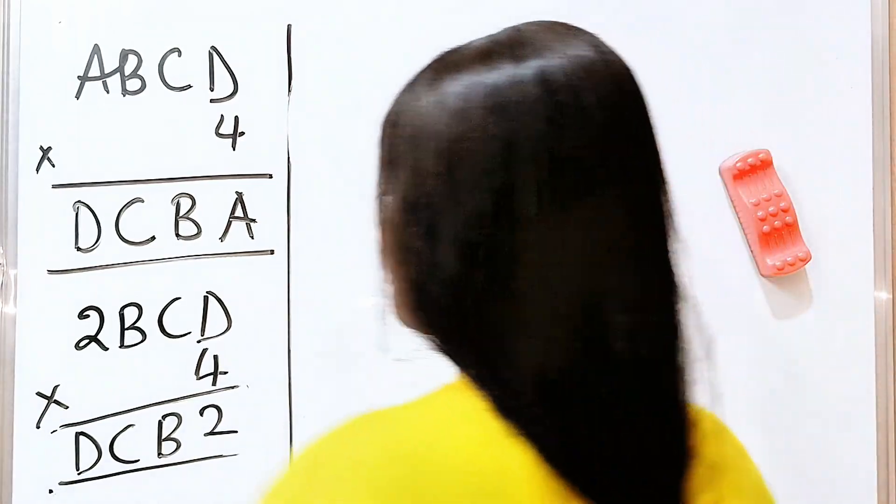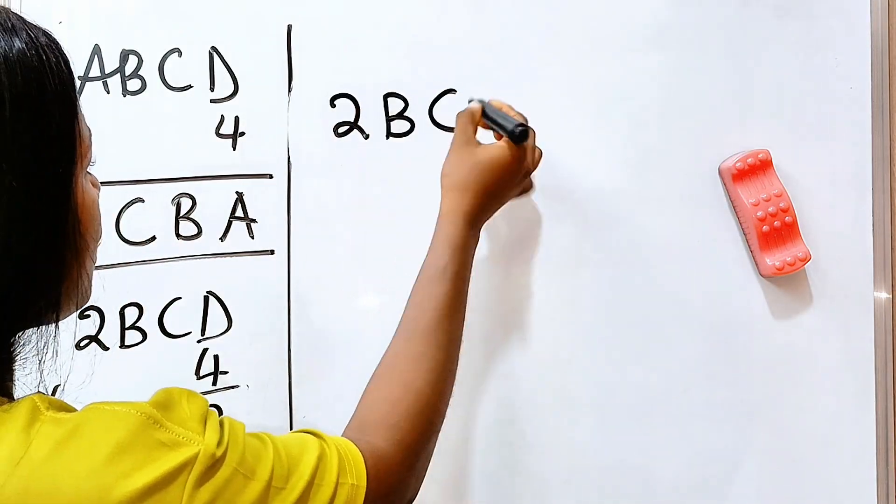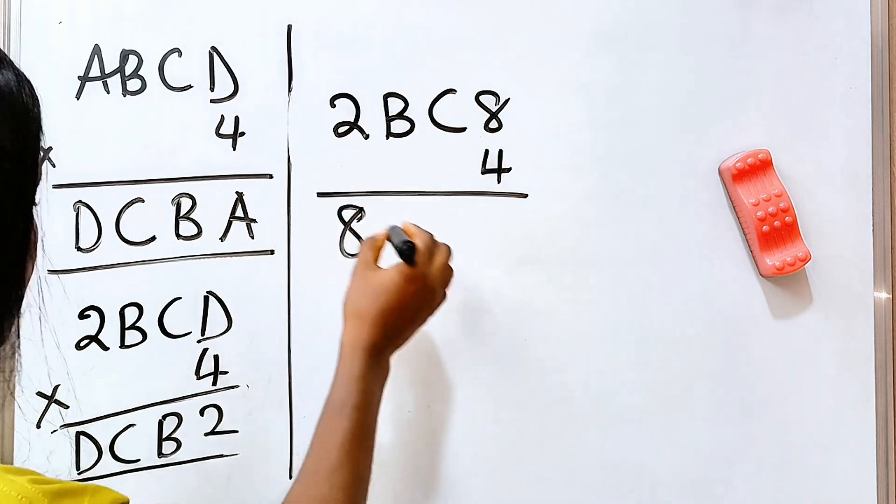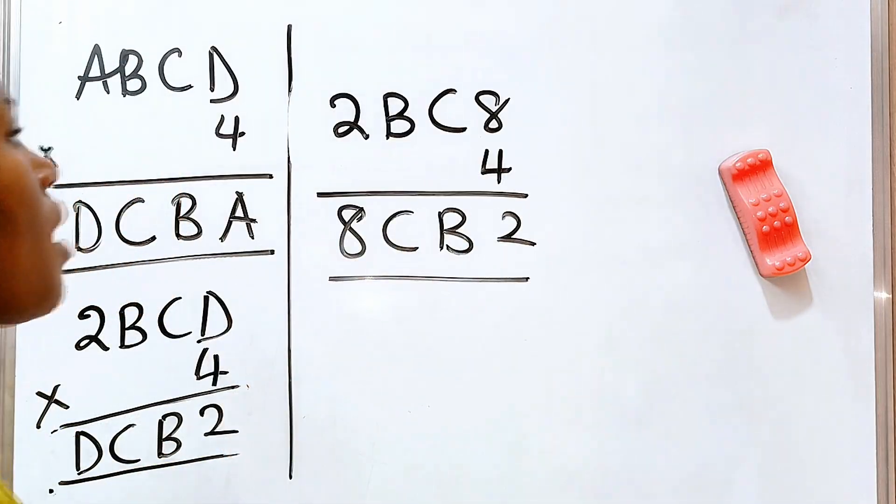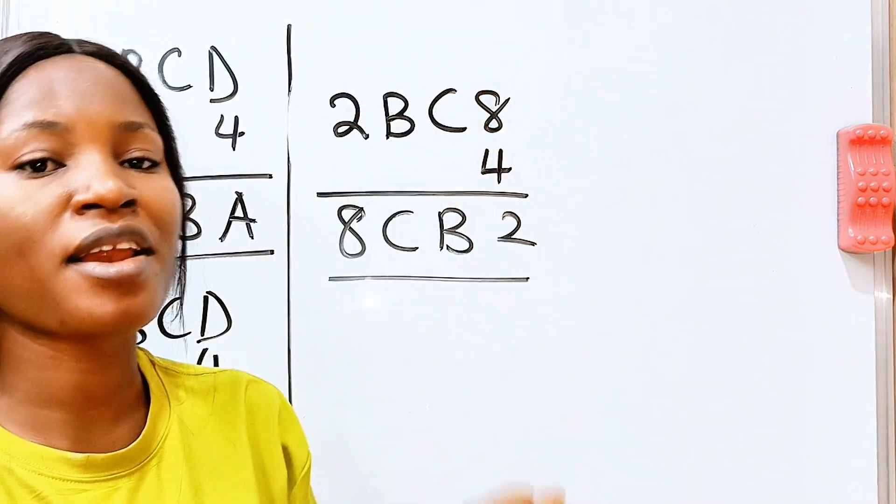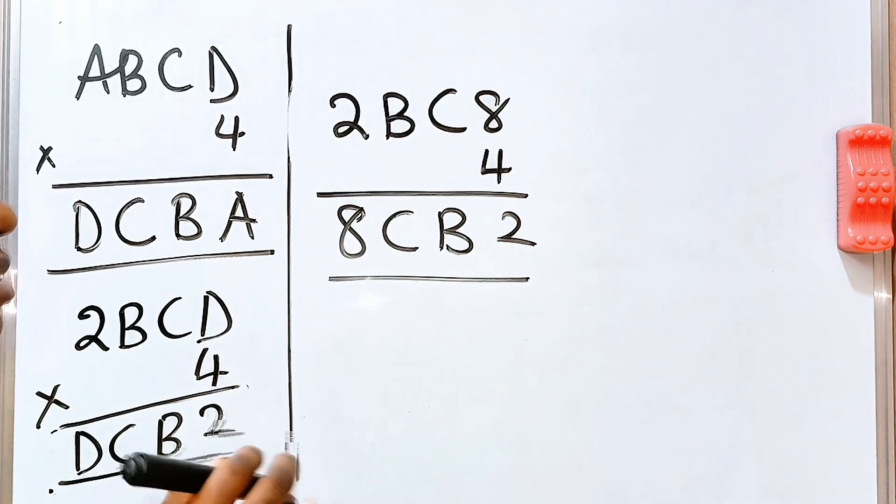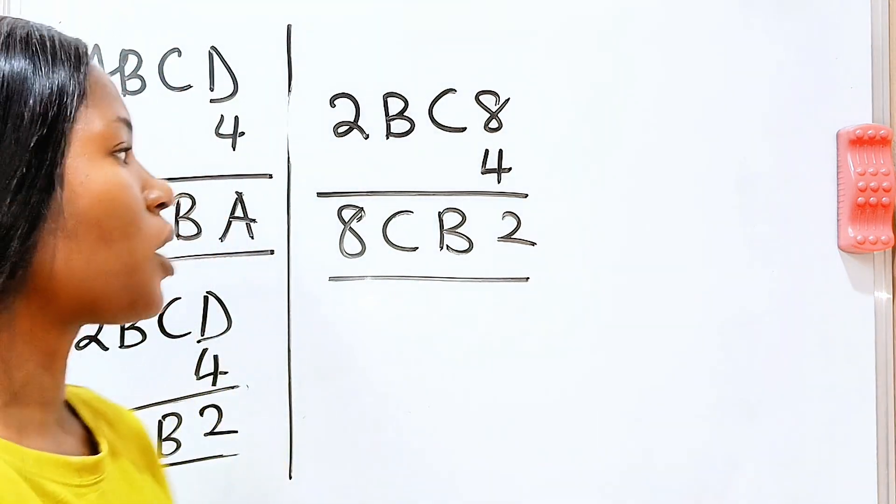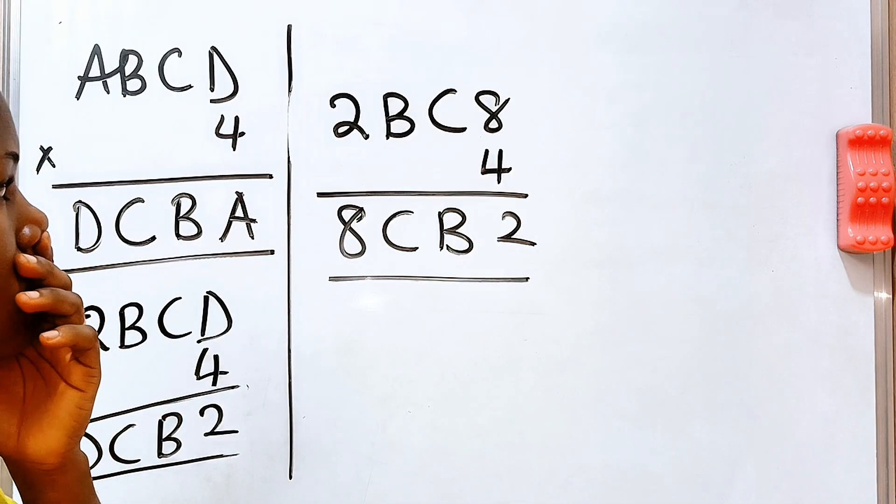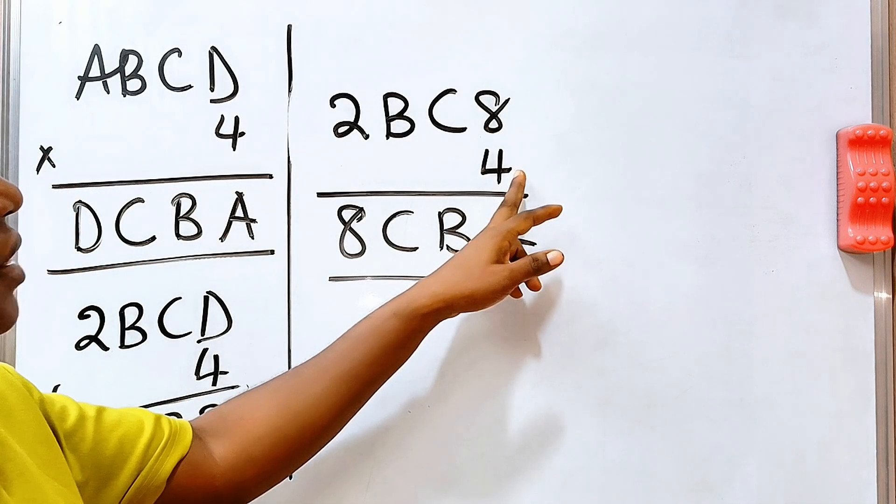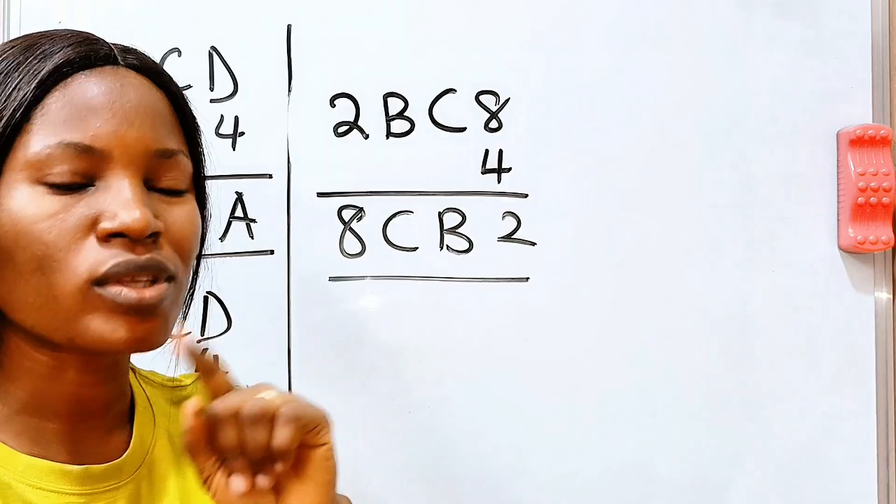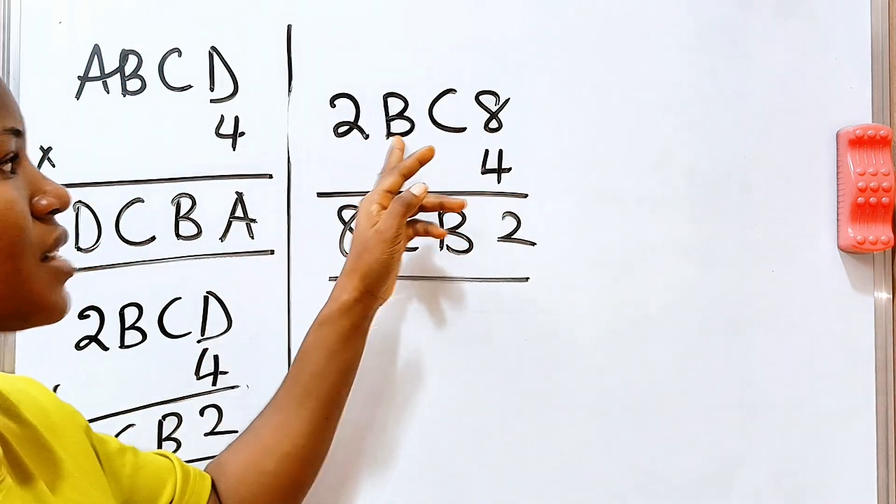So now we'll write 2, B, C, 8. Our D is 8 times 4 will give us 8, C, B, 2. So we still need to get the values of B and the value of C. So how do we do that? It's still tactical, but easy. So this is what we do. We keep comparing. 4 times B is C. Now, we remember that 4 times 2 is 8. That means there is no carry from B at all. We do not carry anything from B. 4 times 2 is 8, meaning that nothing is carried from B.